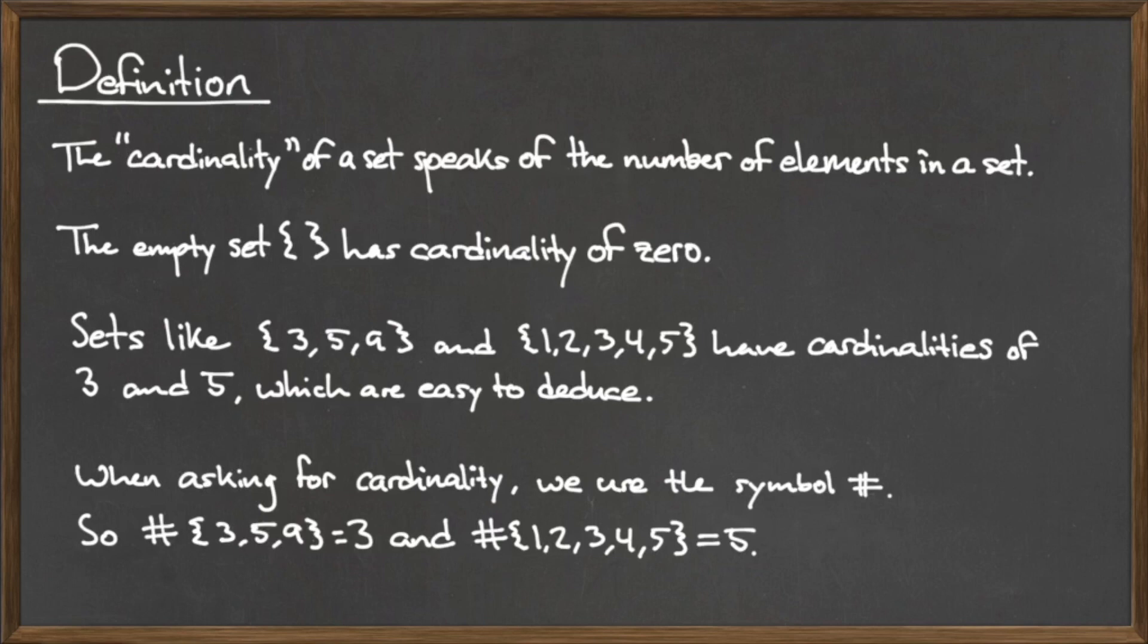We often use the pound sign to abbreviate the word cardinality. So, for the two sets above, we could write the following,